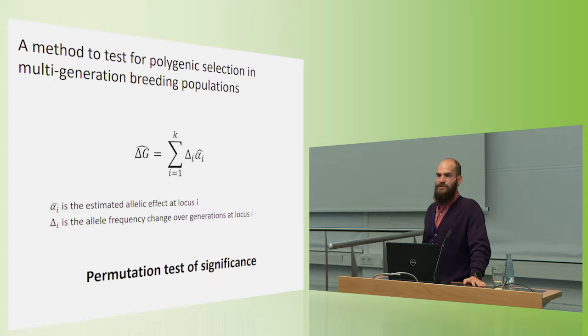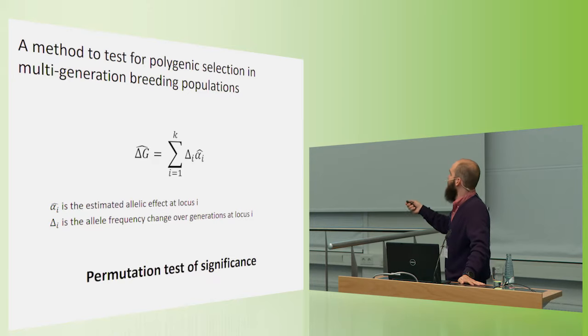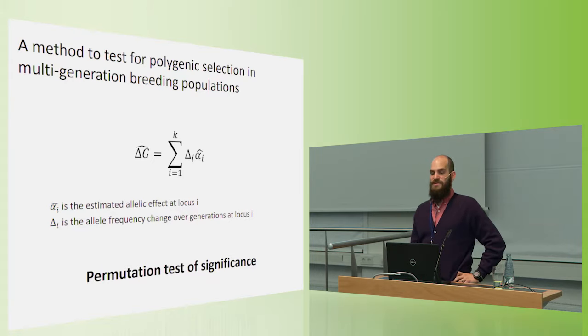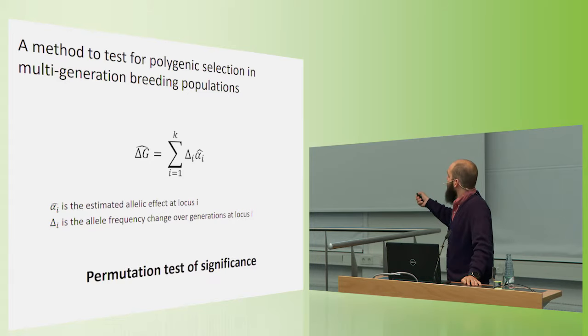So the method involves estimating an allelic effect at every single locus in the genome. And we do that using any genomic prediction method. Through my talk now, we're using RR-BLUP, but you could use anything. And then we also estimate the change in allele frequency across generations at every single locus. So we have an estimated allelic effect and a change in allele frequency. And then we make a composite statistic, which we call G-hat, which is the sum over all loci of the change in allele frequency multiplied by the effect size of that locus. And I want to emphasize, our effect size estimates are very bad.